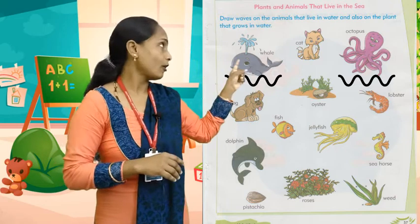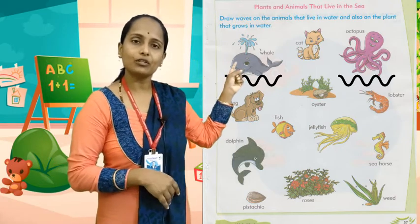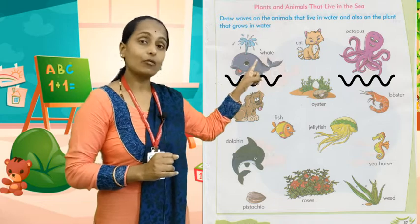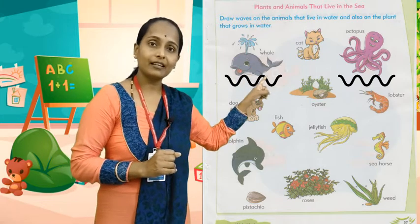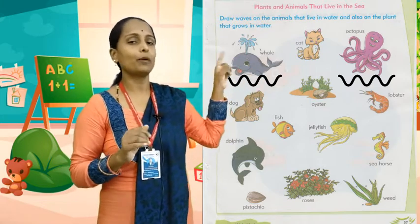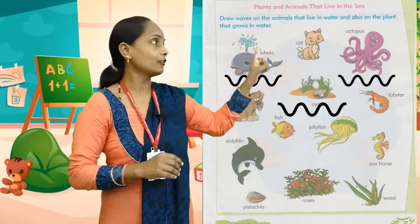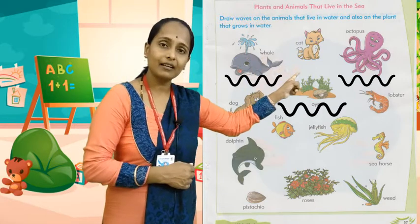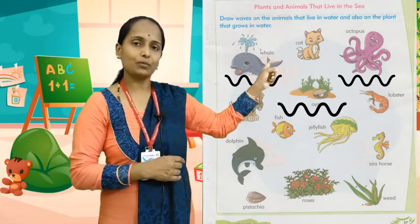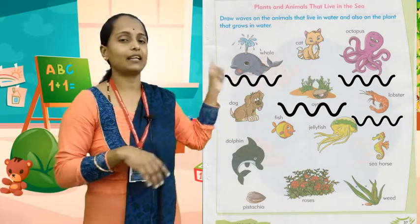Next — dog. Does a dog live in the sea, bachyo? No, okay. Next — oyster. Yes, it lives in the sea. So what do you have to do? Draw waves. Next — lobster. Yes. What do we have to do for it? Draw waves. It also lives in the sea.